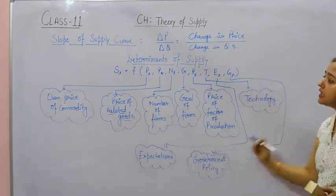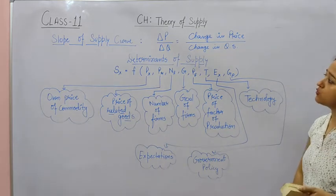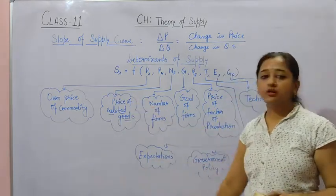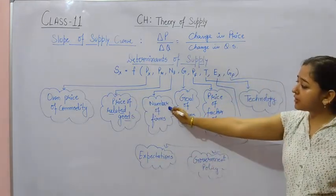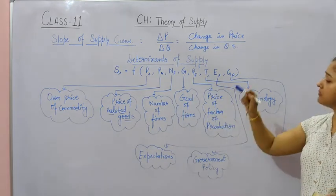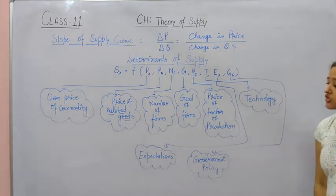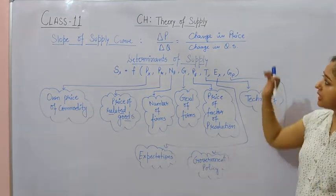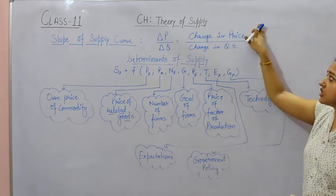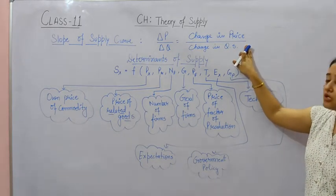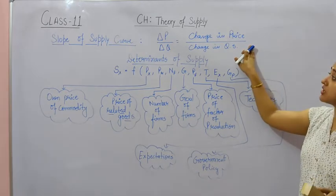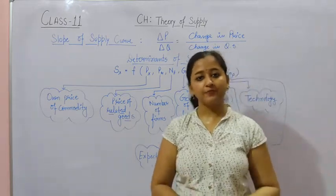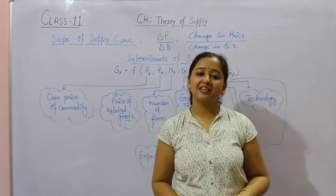So these are all the determinants of supply on which our supply depends: price of commodity, price of related goods, number of firms, goal of the firm, price of factor of production, technology, expectations, and government policy. And we also learned about the slope of supply — it shows the ratio between change in price and change in quantity supplied. That's all for today. Thank you.